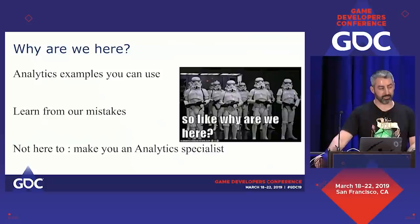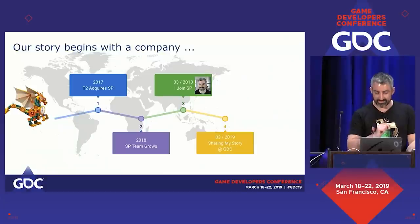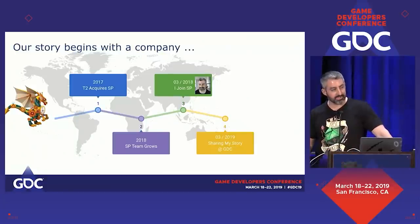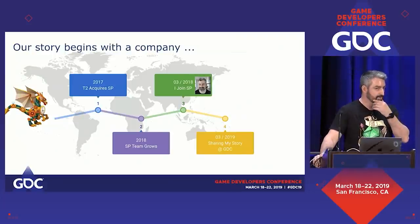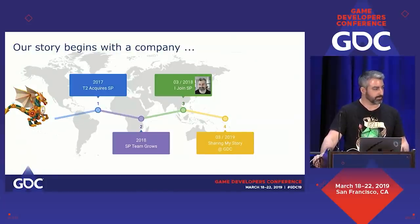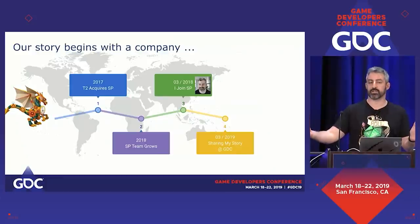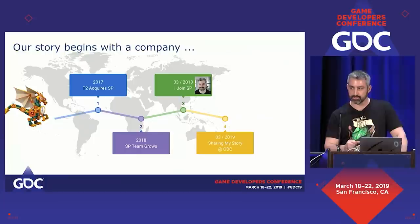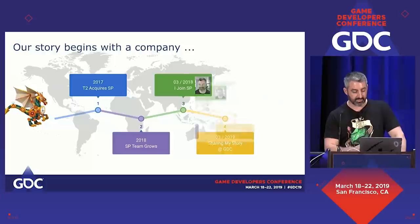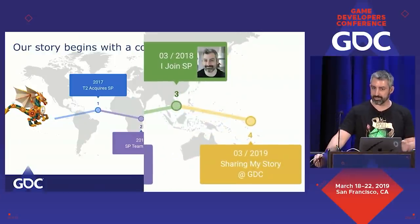We are not here to make you an analytics expert — that might take a bit more than an hour. Our story begins with a company: Take Two acquired Social Point in 2017, after which Social Point began a strong focus on growth. They brought in heads of product from Rovio and King. I joined the company about a year ago — this is me on my first day, so happy — and the events we'll focus on are those that transpired between my joining and this presentation.